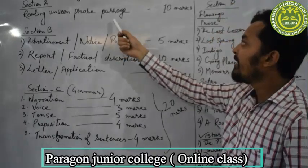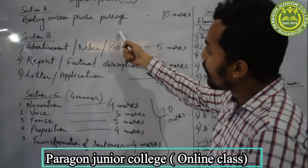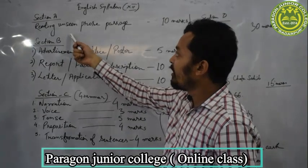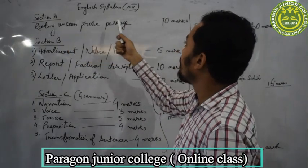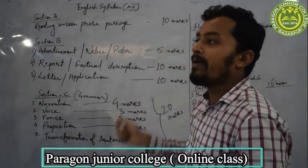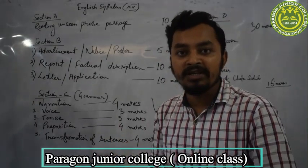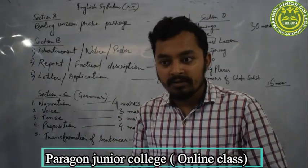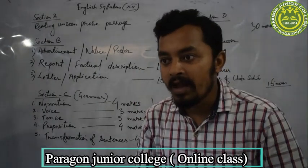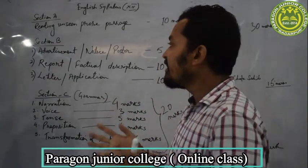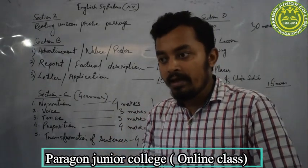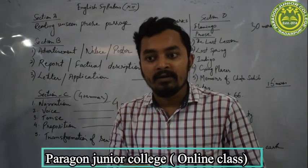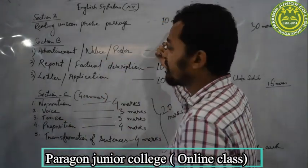Here is the complete breakup of the syllabus of class 12. In Section A it is written: Reading Unseen Prose Passage, consisting of 10 marks. In your question paper you will see a passage — there will be a long passage from which some questions will be there. You have to read the passage nicely. If you read for the first time and do not understand the passage, go for a second reading. The thing is that you want to understand the passage.